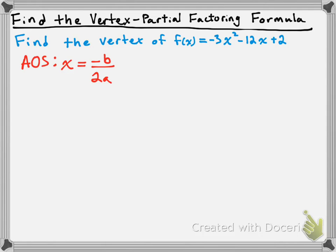That begs the question: what's b and what's a? Well, you need to remember standard form for a quadratic function, which is y = ax² + bx + c. The a out front — the leading coefficient — is the a we substitute into our axis of symmetry formula, and the b value in the formula comes from the b value in standard form.